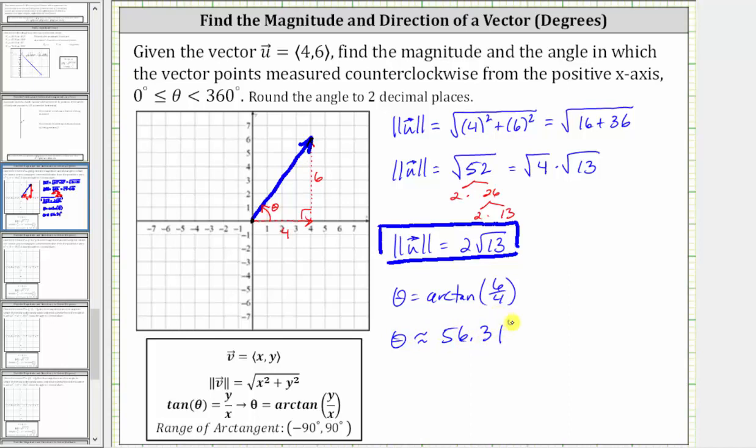Now remember, it's important to make sure this is the correct angle, meaning in the correct quadrant as well as the given interval. Because we're in quadrant one, this is the correct angle for theta.